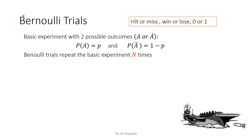These are basic experiments with two possible outcomes: A or A-complement — either you succeed or you fail. We refer to the probability of event A, which is the event of main interest — success — as P. The probability of failure, or A-complement, will be 1 minus P. So we have a main possible event with probability P and its complement with probability 1 minus P.